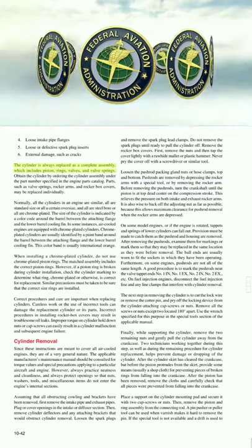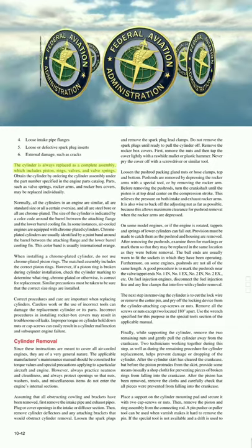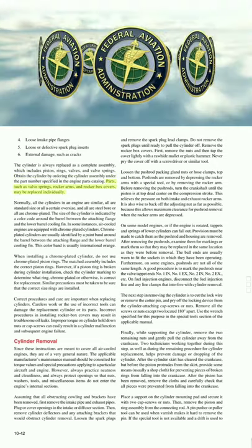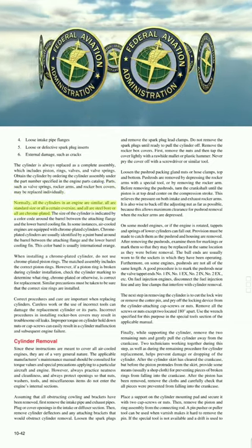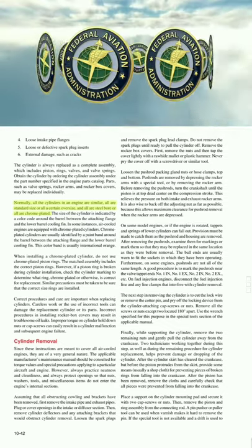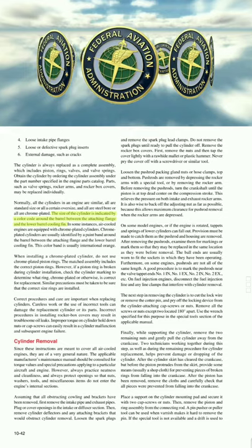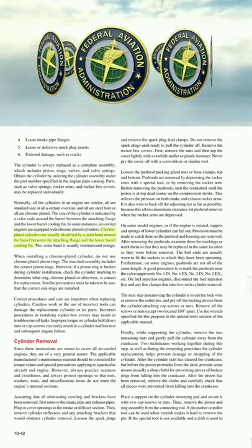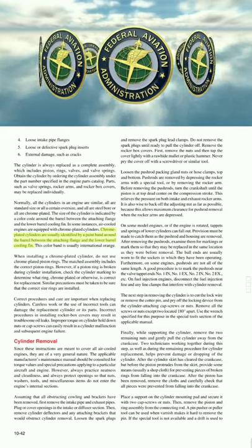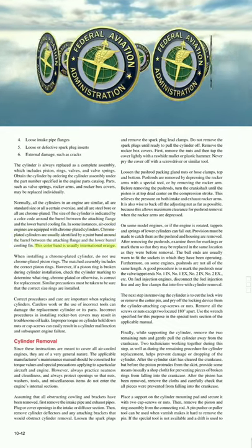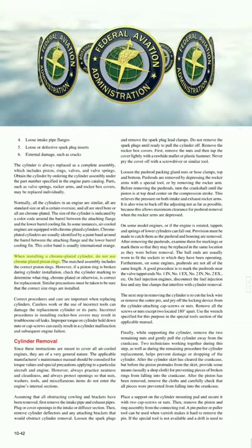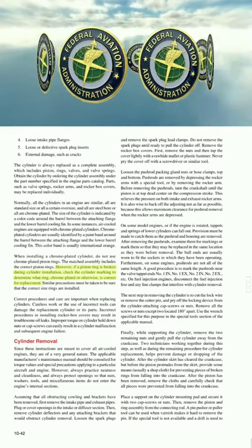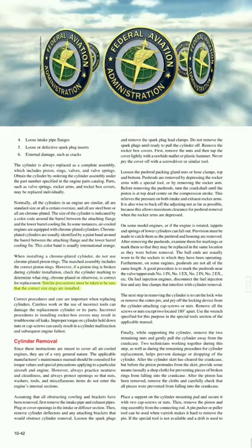The cylinder is always replaced as a complete assembly, including piston, springs, valves, and valve springs. Normally all cylinders in an engine are similar — all standard size or a certain oversize, and all steel bore or all chrome plated. The size of the cylinder is indicated by a color code around the barrel between the attaching flange and the lower barrel cooling fin. Chrome plated cylinders are usually identified by an international orange paint band. When installing a chrome plated cylinder, do not use chrome plated piston rings; use the correct rings from the matched assembly.